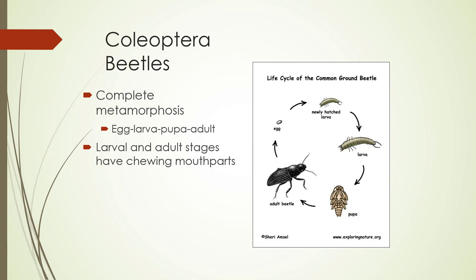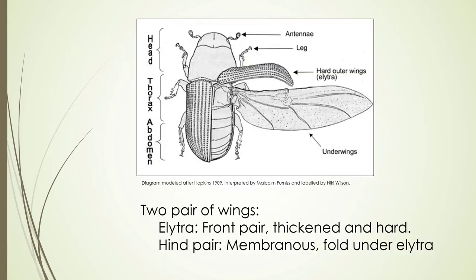In this case, we have a common ground beetle, which is a beneficial insect that will eat other insects and slugs. They have two pairs of wings. The elytra front pair are thickened and hard — when you think of a lady beetle, you think of that colorful wing they have. The hind pair are membranous and they fold under the elytra.